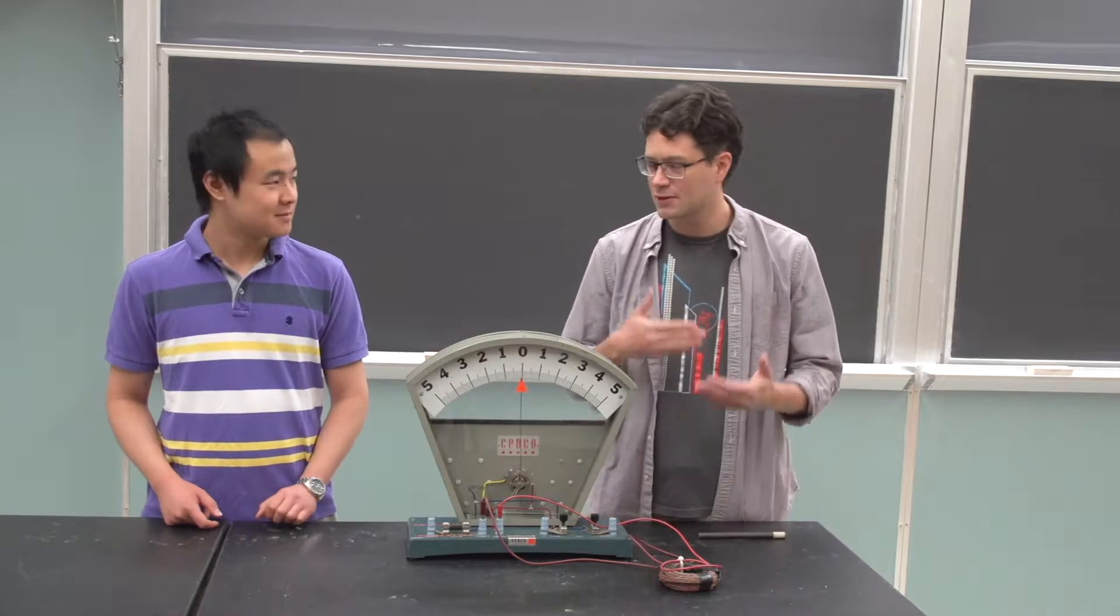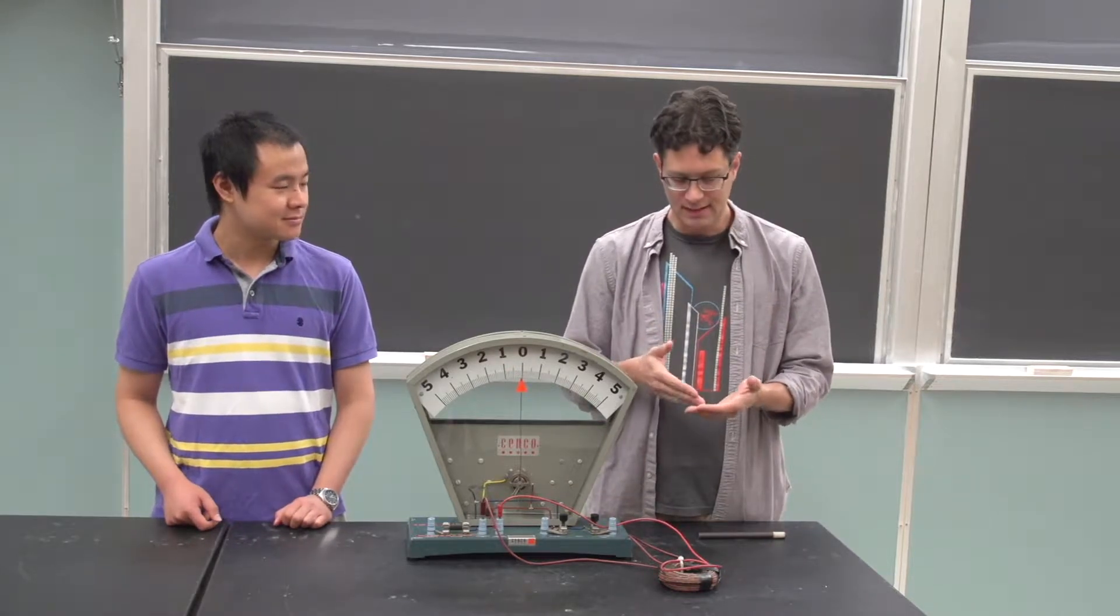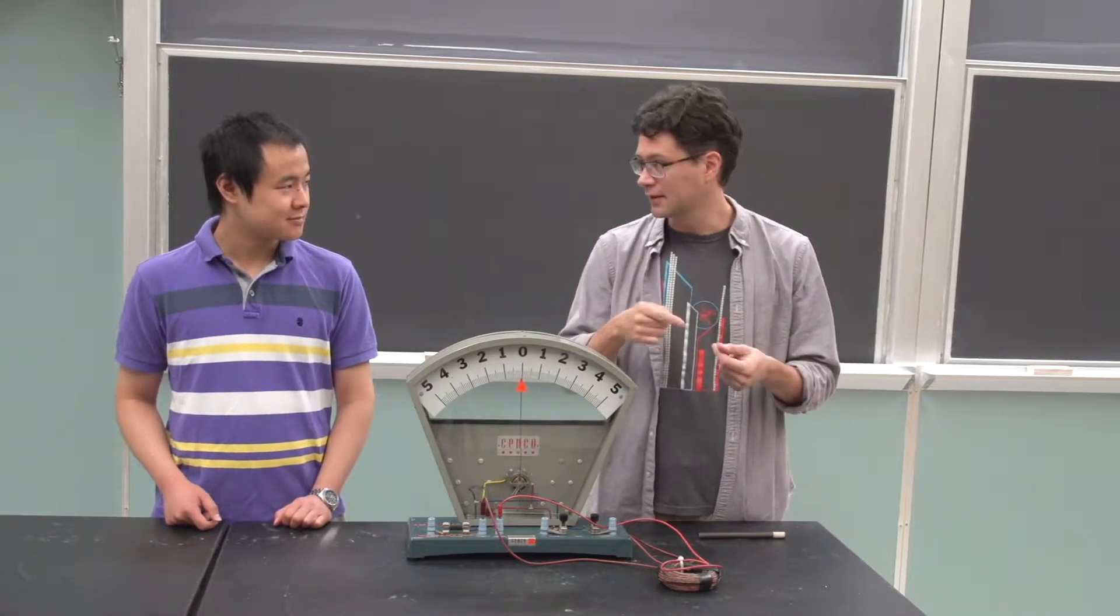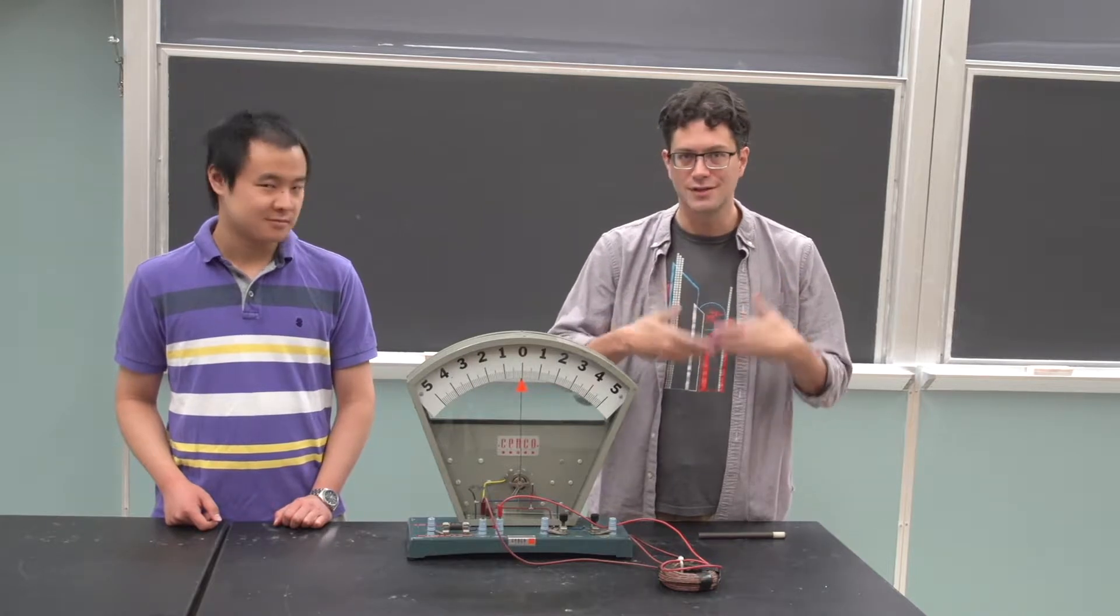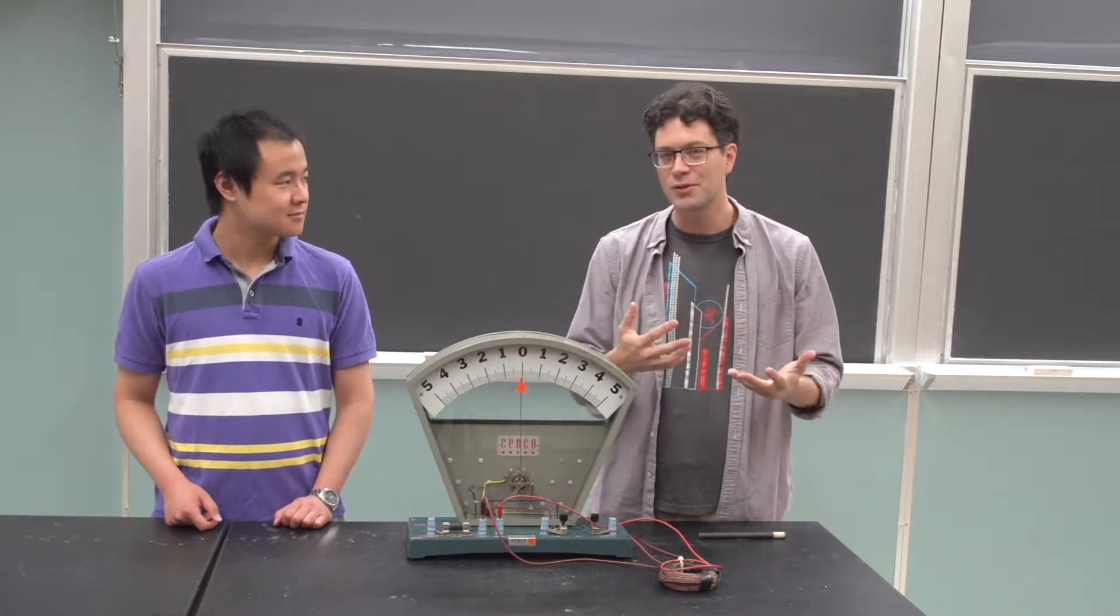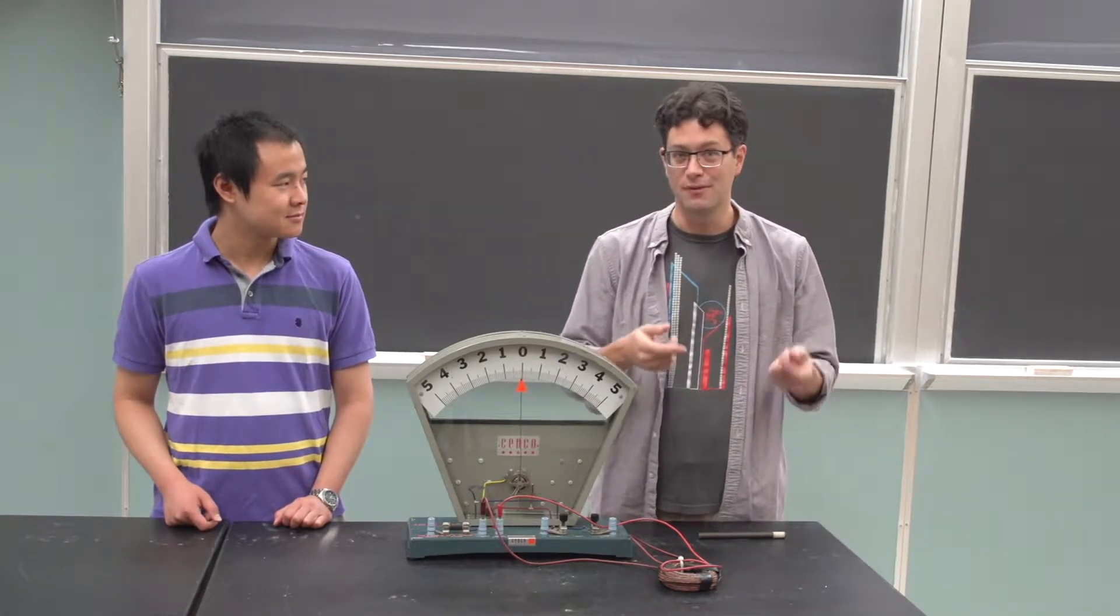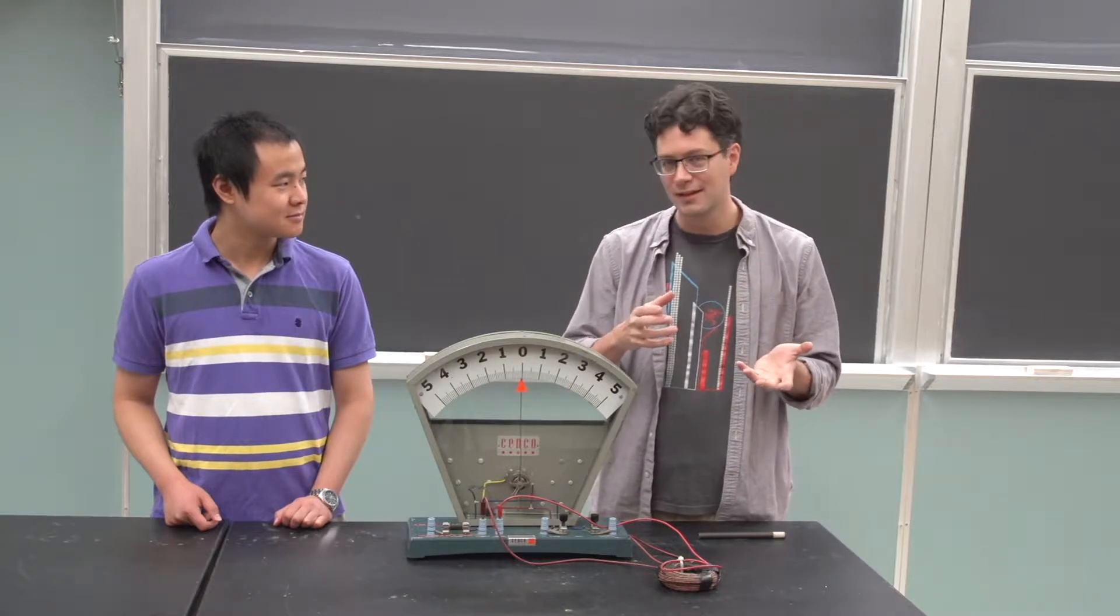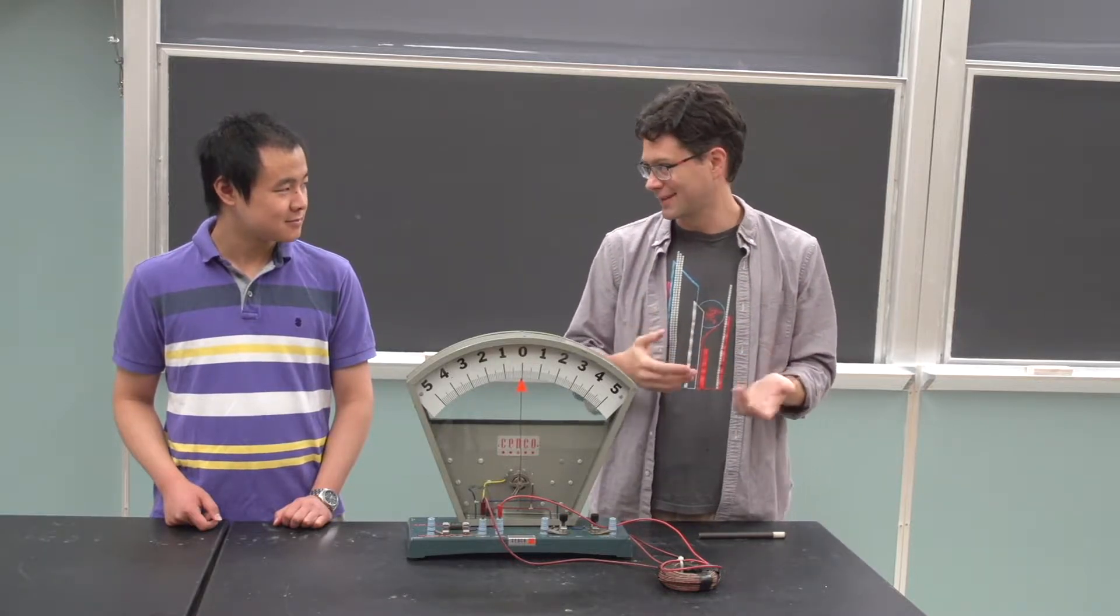You remember we've seen that if I have an electric current in a wire, I will generate a magnetic field around that wire. So moving electrons generate a magnetic field. Well, it turns out the reverse is also true. If I have a moving or changing magnetic field, I can create an electric field and an electric current.